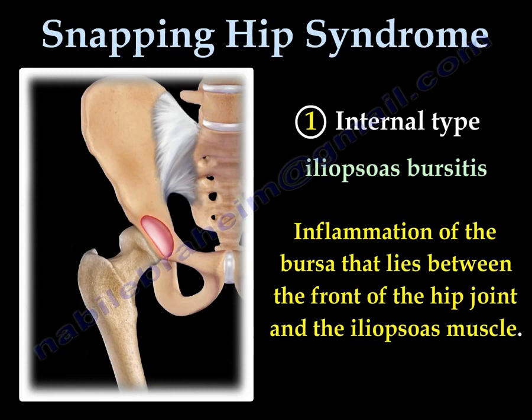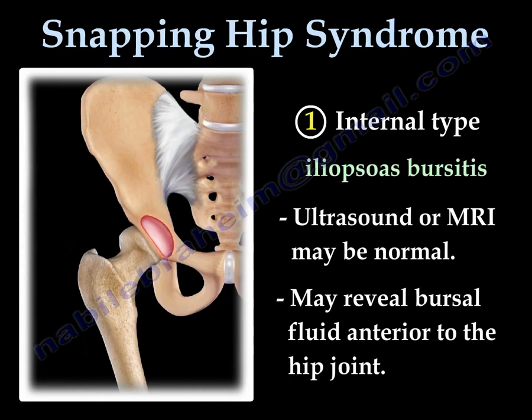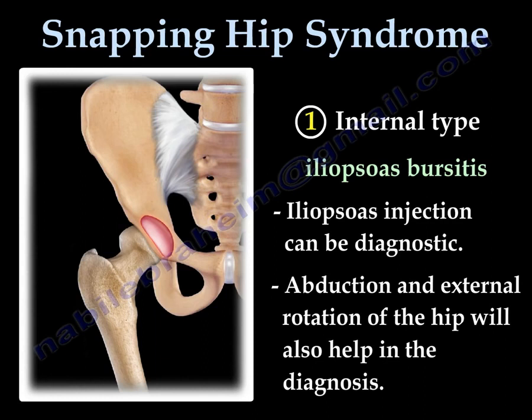Diagnosis of the internal type is usually difficult. Ultrasound or MRI may be normal, or may reveal bursal fluid anterior to the hip joint. The iliopsoas tendon injection can be diagnostic. Abduction and external rotation of the hip and hearing the snap will help in the diagnosis.